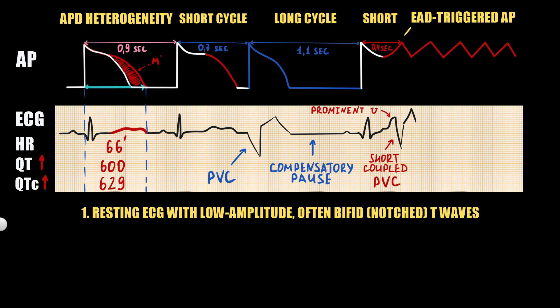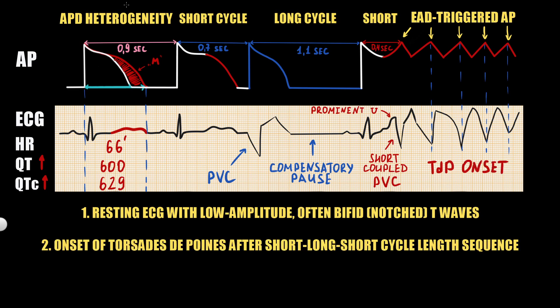Once an early afterdepolarization-triggered action potential occurs, it can provoke additional triggered action potentials, which are represented on ECG as the onset of torsades de pointes. So in congenital long QT syndrome type 2, torsades de pointes typically manifests after a short-long-short cycle length sequence: the first short is a premature ventricular contraction, the long is a compensatory pause, and the second short is a short-coupled PVC.